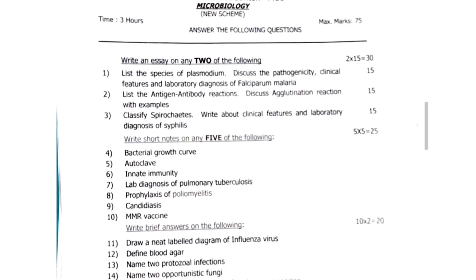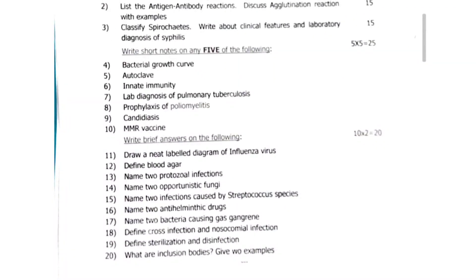Next, write brief answers of the following. Eleventh question: draw a neat labelled diagram of influenza virus. Twelfth question: define blood dagger. Thirteenth question: name 2 protozoal infections. Fourteenth question: name 2 opportunistic fungi. Fifteenth question: name 2 infections caused by streptococcus species. Sixteenth question: name 2 anti-helminthic drugs. Seventeenth question: name 2 bacteria causing gas gangrene. Eighteenth question: define cross infection and nosocomial infection. Nineteenth question: define sterilization and disinfection. Twentieth question: what are inclusion bodies? Give 2 examples.